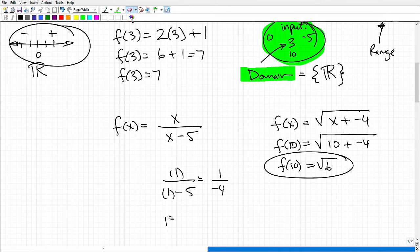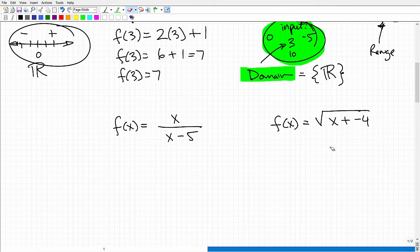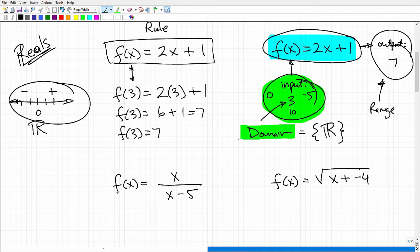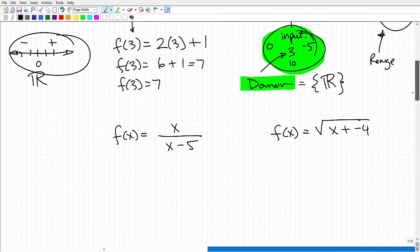So now let's just discuss what the domain could be for these particular functions. Here we have a rational function. So I can plug in. Here's my input values. So if I'm trying to find, let's say, f of 1. Let me give myself some more room. It would be what? It would be 1 over 1 minus 5. I'm going to replace these x's with 1. And I'm going to get 1 over negative 4. And that would be good to go. That's my answer. So f of 1, f of 1 is negative 1 fourth. No problem.